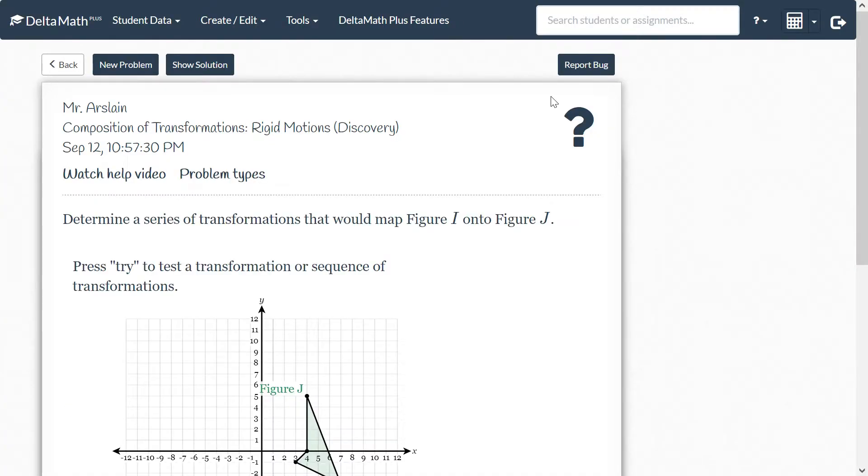All right guys, we're going to go over another DeltaMath skill here. We're going to look at composition of transformations. This is the rigid motions, and this is particularly the discovery section, so it's going to be a little more forgiving than the regular rigid motions.